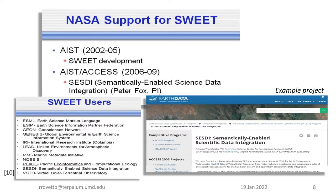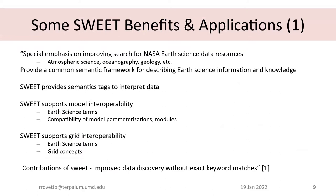NASA's original development and use of SWEET included various applications and users. Some of you might recognize the SESDI in the bottom right corner. There are a number of other users throughout the history of SWEET since it was originally developed. SWEET effectively provides semantic tags for interpreting data. It had an original emphasis on improving search within NASA for Earth science data content — everything from atmospheric science to geology. It's a system intended for interoperability of Earth science content and data.